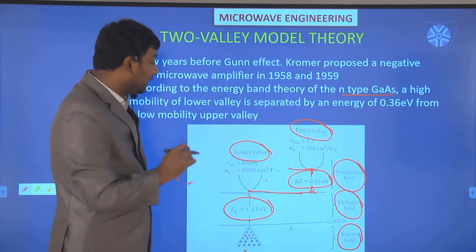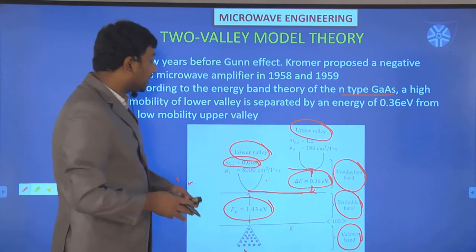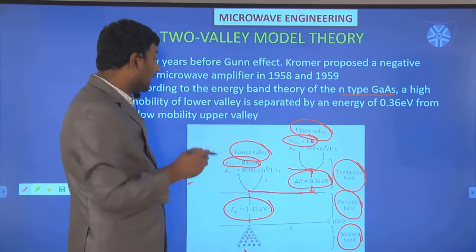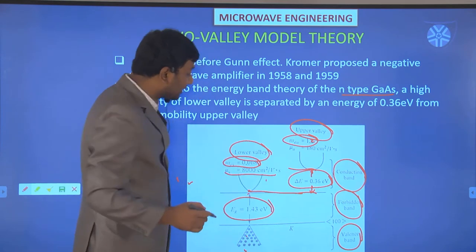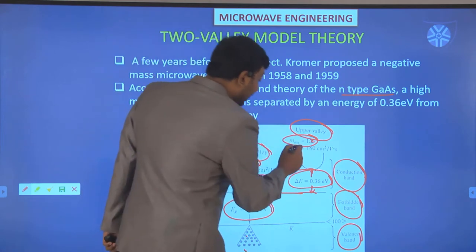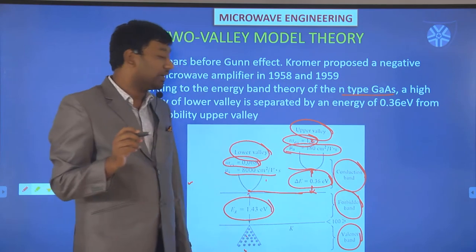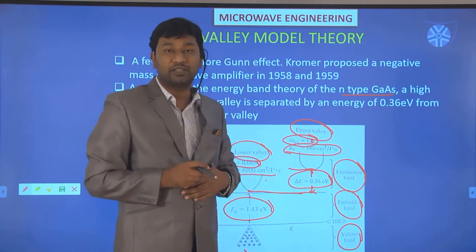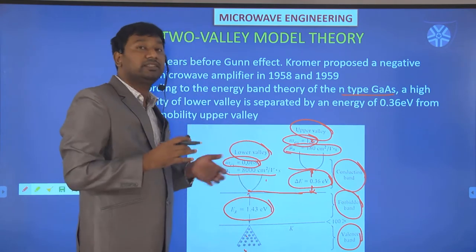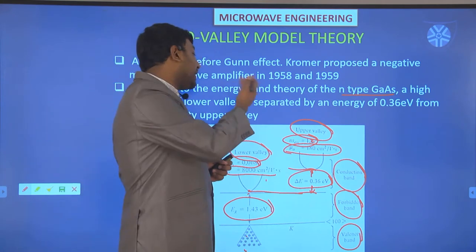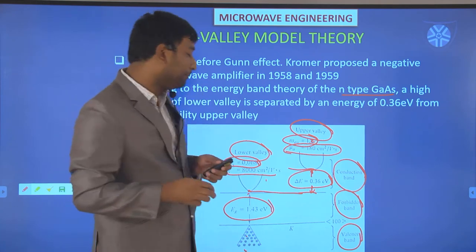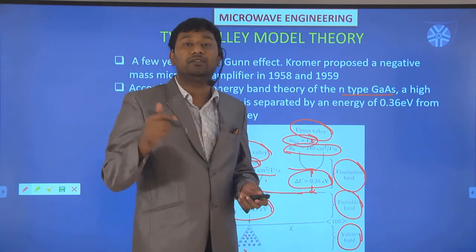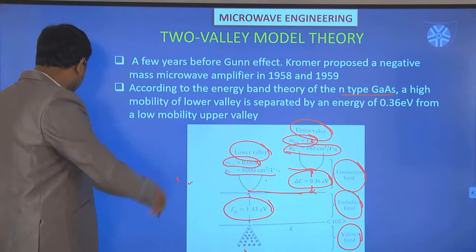Another key difference between the two valleys is the effective mass and mobility of electrons. In the lower valley, the effective mass is small and electron mobility is high — about 8,000 cm² per volt-second. In the upper valley, the effective mass is 1.2 and mobility is very low at 180 cm² per volt-second. These are the special properties of n-type gallium arsenide, and on this basis the two-valley model theory is developed to explain how negative resistance is generated.